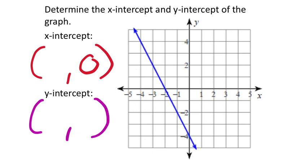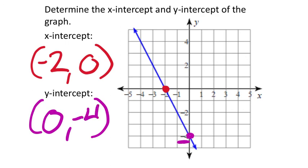For this final example, the x-intercept has y value 0 and the y-intercept has x value 0. The line crosses the x-axis at x equals negative 2, so the x-intercept is (negative 2, 0). The y-intercept is on the y-number line at negative 4, so that's (0, negative 4). These intercepts must always be written as ordered pairs because they are locations on the grid.